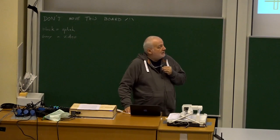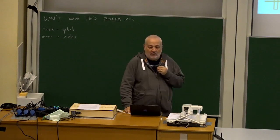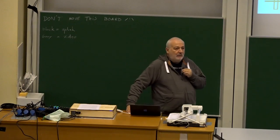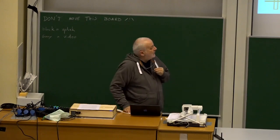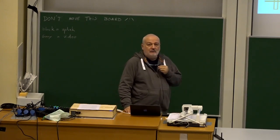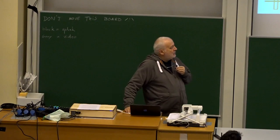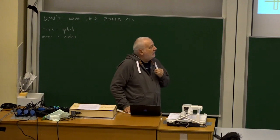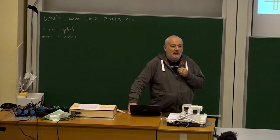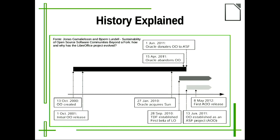This is more or less the history explained. We have a heritage in OpenOffice, which was created in 2000 and basically ended its life in 2011. OpenOffice was forked twice — by LibreOffice and by Apache OpenOffice. Apache OpenOffice was a fork; they changed the license completely. It's not a continuation.